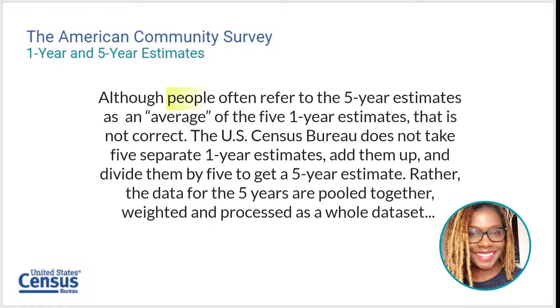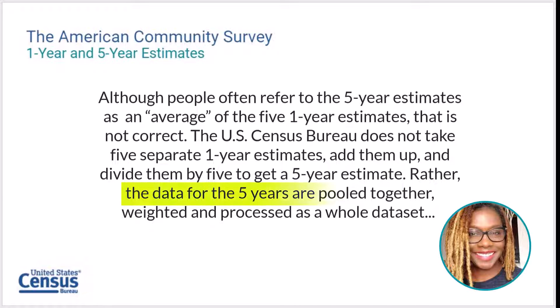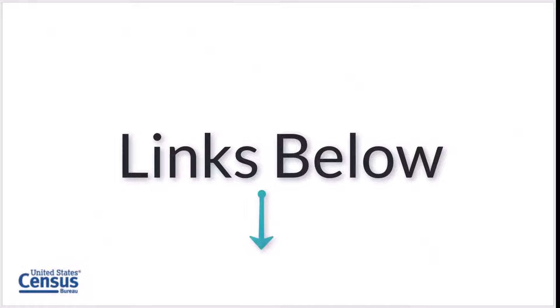People often refer to the five-year estimates as an average of the five one-year estimates, and that is not correct. The Census Bureau does not take five separate one-year estimates, add them up, and divide them by five to get a five-year estimate. Rather, the data for the five years are pooled together, weighted, and processed as a whole data set. The link to more information about this topic and all other webpages we discuss today are provided below the video.